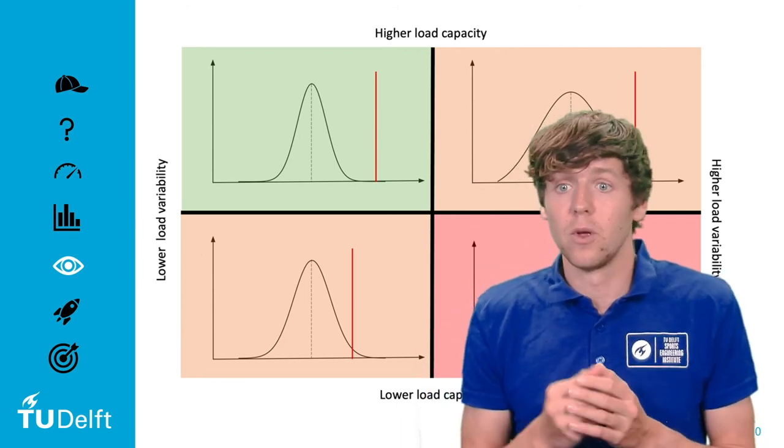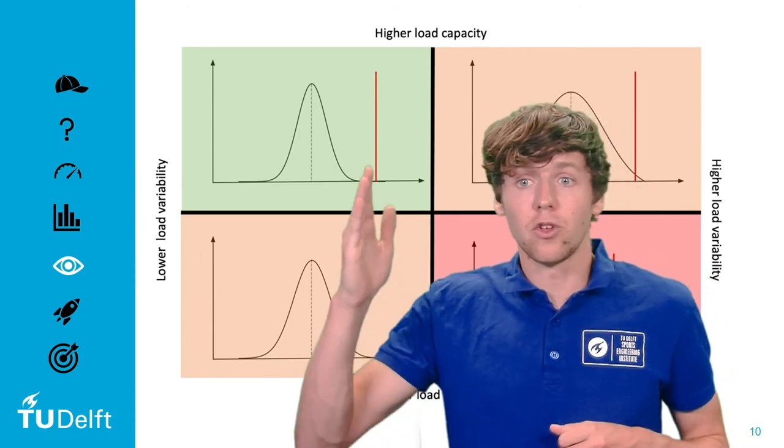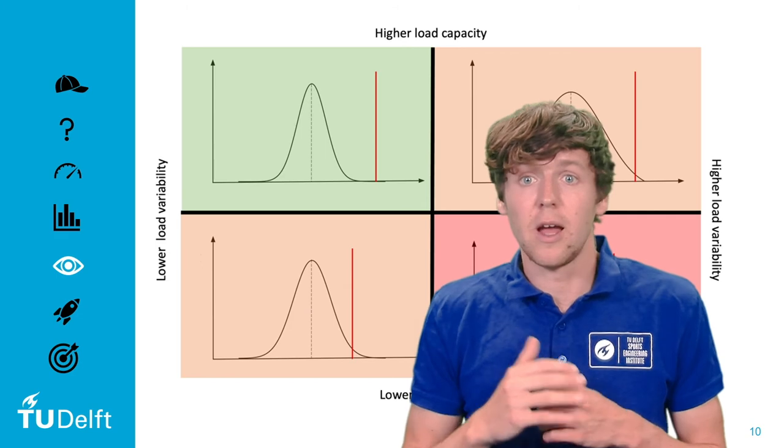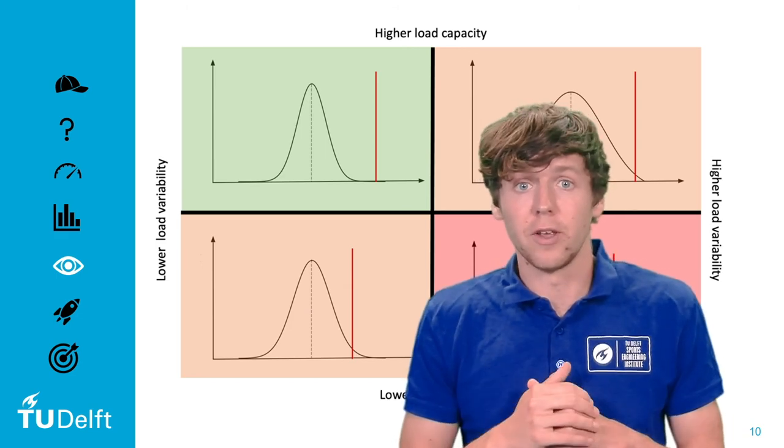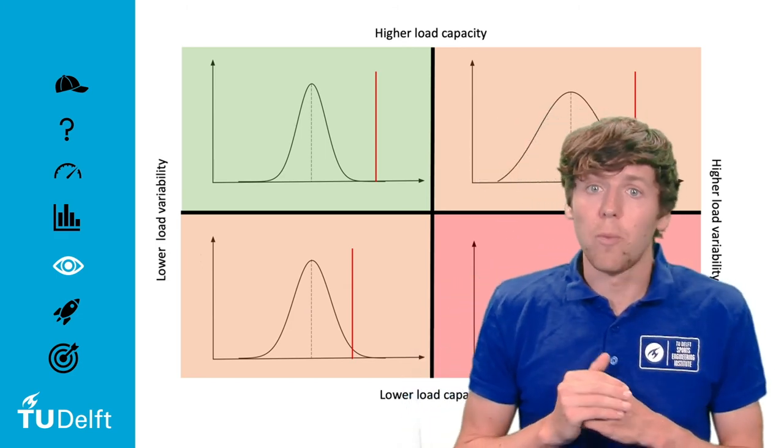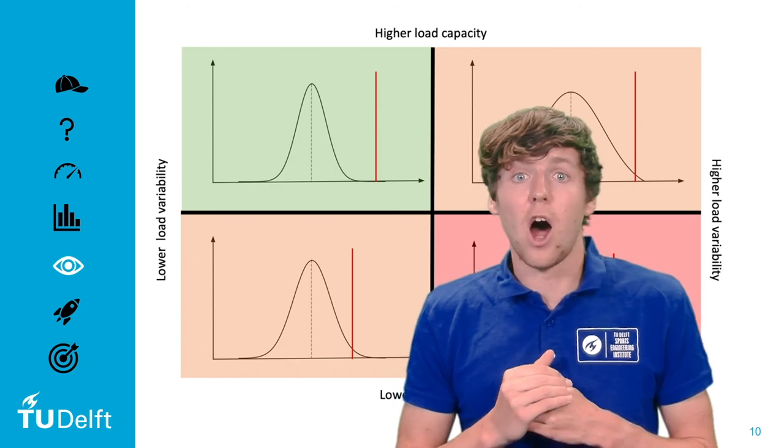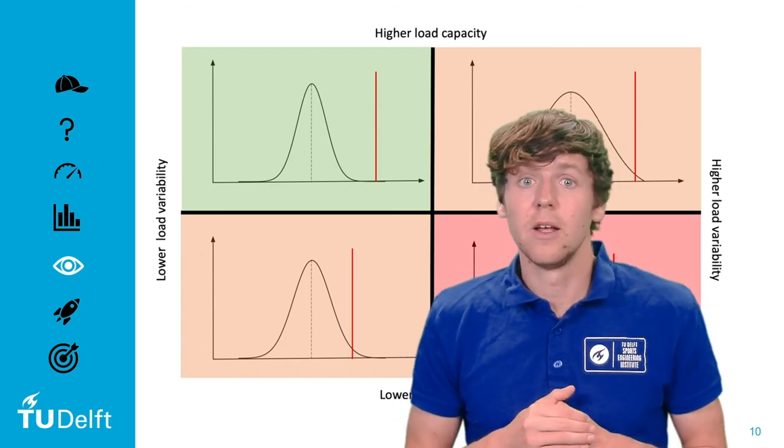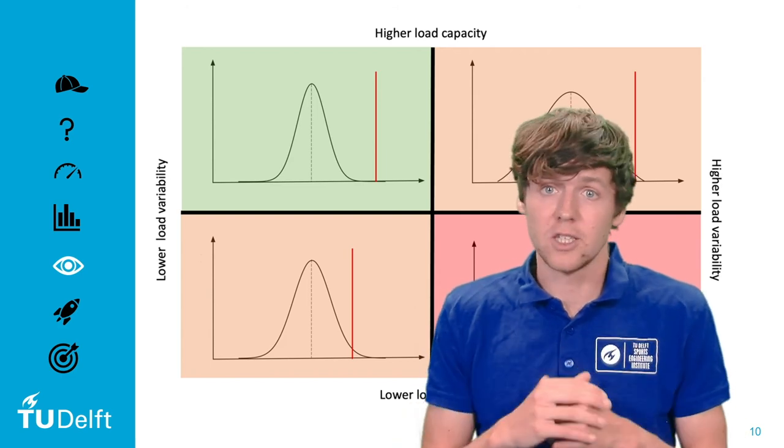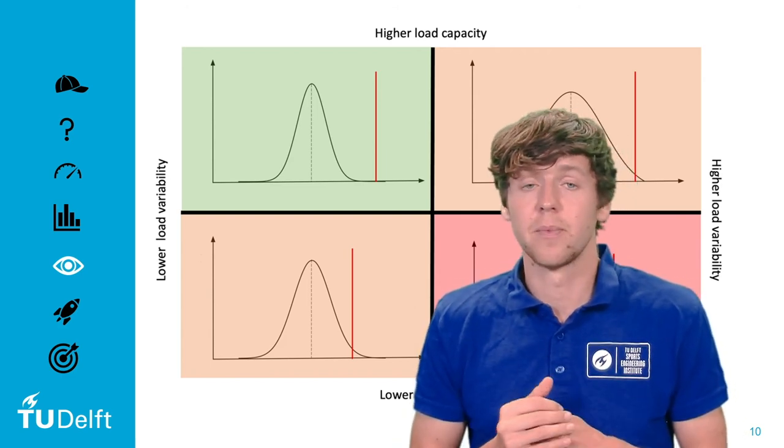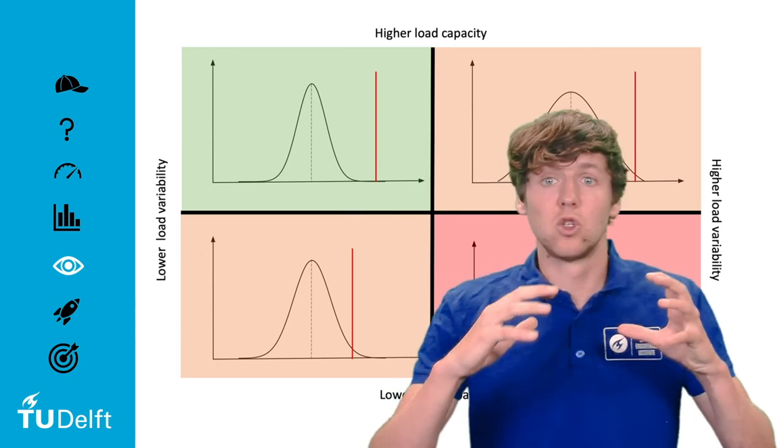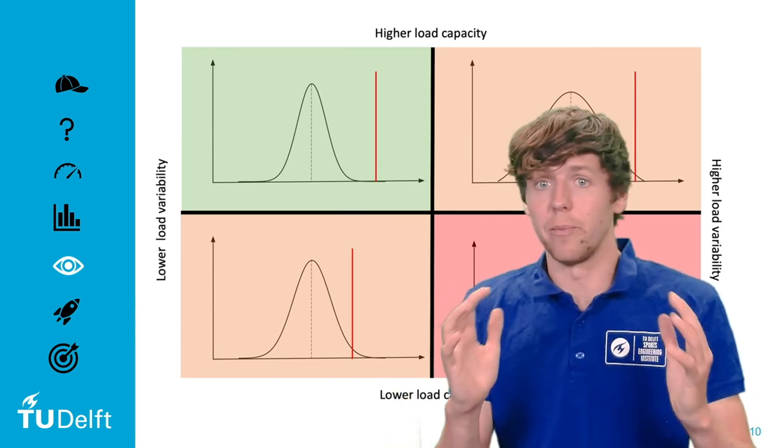If we, for example, compare these two panels on the left, they both have the same magnitude and the same load variability. However, the top left panel has a higher load capacity, here represented with a red line, and this has a lower chance of sustaining an injury. It is thus important to understand the interplay between load magnitude, load variability, and the load capacity in the future to prevent athletes from overuse injuries.